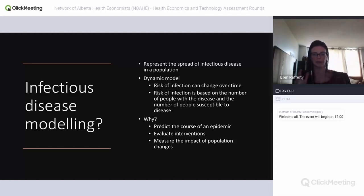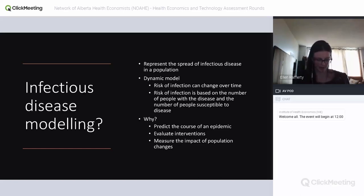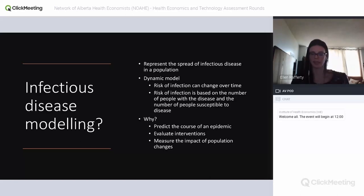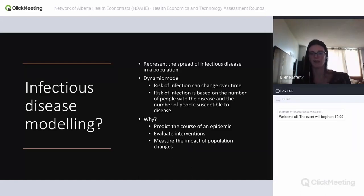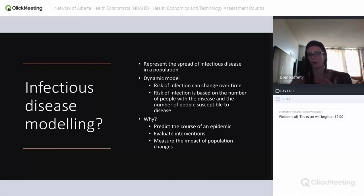Now I'll give some background on infectious disease modeling. One of the key characteristics of these models is that they're dynamic — the risk of infection can change over time, allowing for interactions of variables across time. The risk of infection is based not only on contacts and likelihood of transmission per contact, but also on the number of people in the community who are infected, which we've heard a lot about with COVID.